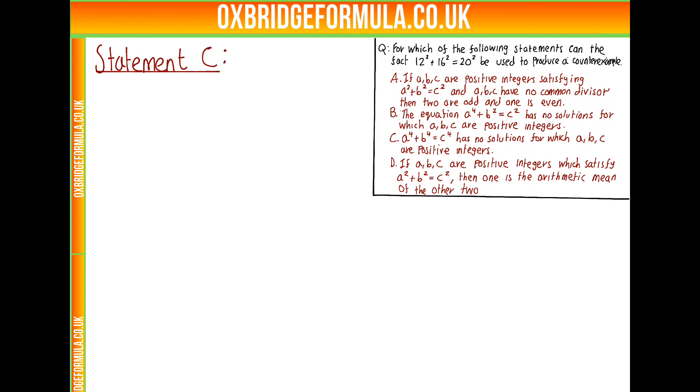Now looking at statement C, we have 12 squared plus 16 squared equals 20 squared, but to have hope of finding A, B, and C as a counterexample, we need every number here to be a perfect square. 16 is because it's 4 squared, but 20 and 12 are not, so we're not going to build a counterexample to this. The other reason is that this statement is true; it's a very simple case of Fermat's last theorem, if you've heard of it.